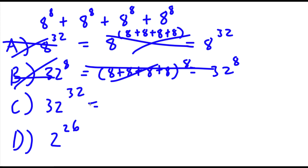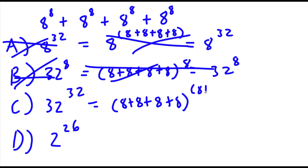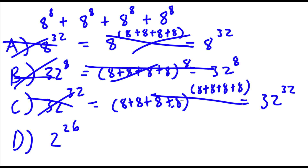Now for 32 to the power of 32, they did both — they added all the exponents and the bases. So they did 8 plus 8 plus 8 plus 8 to the power of 8 plus 8 plus 8 plus 8, and they got 32 to the power of 32. And this method is wrong as well.